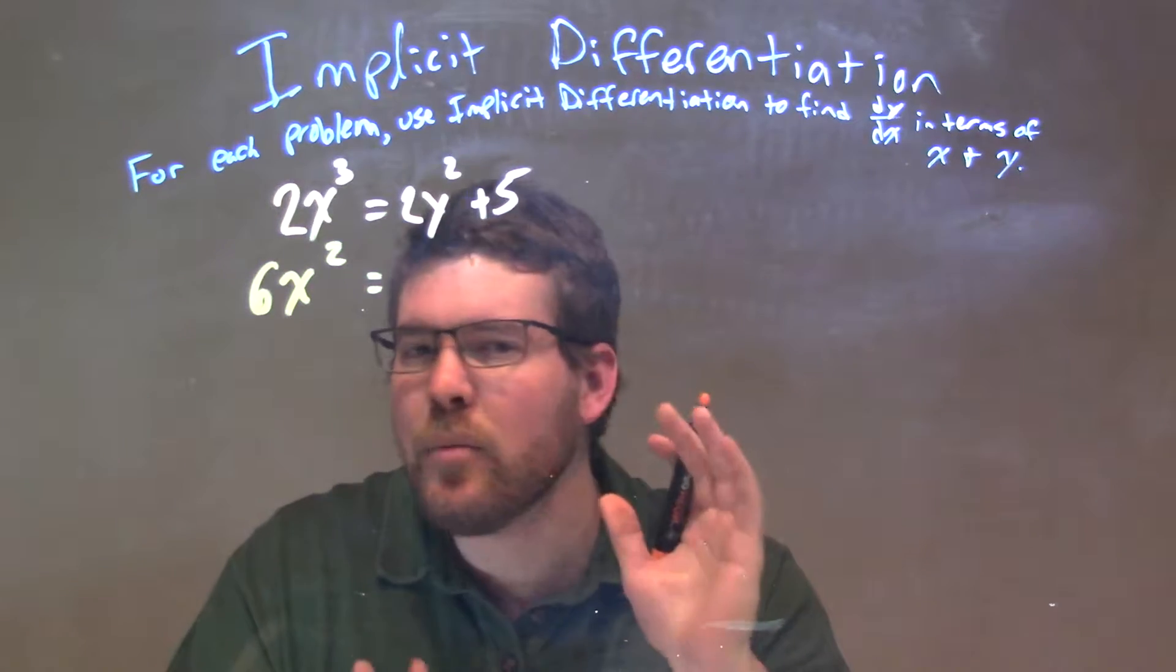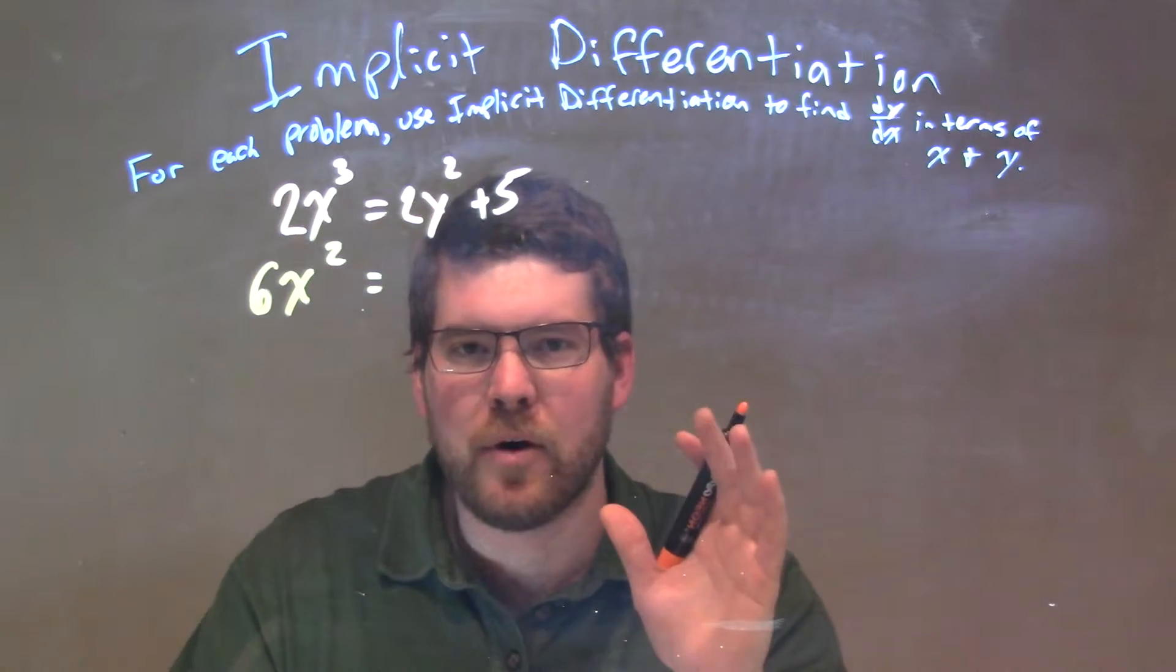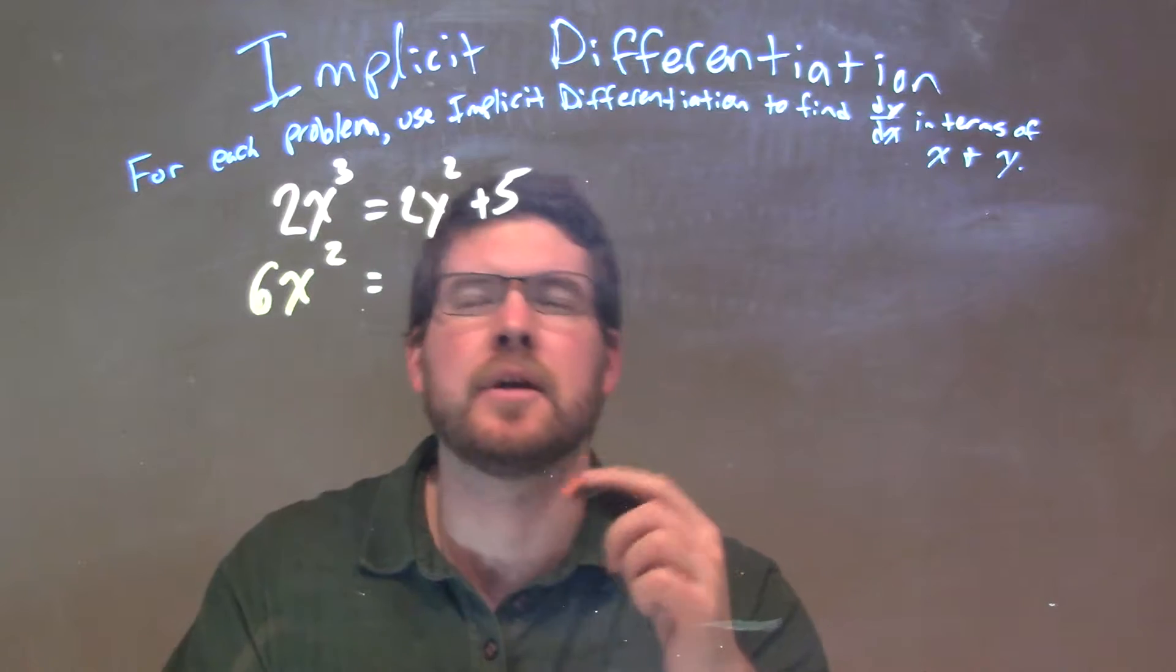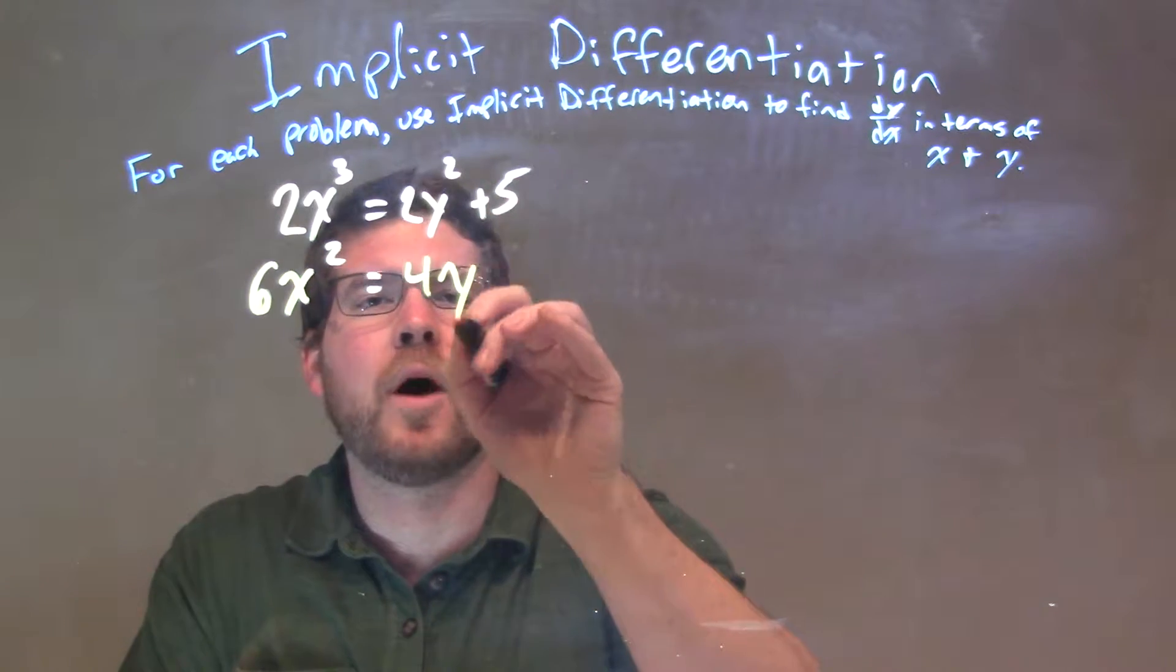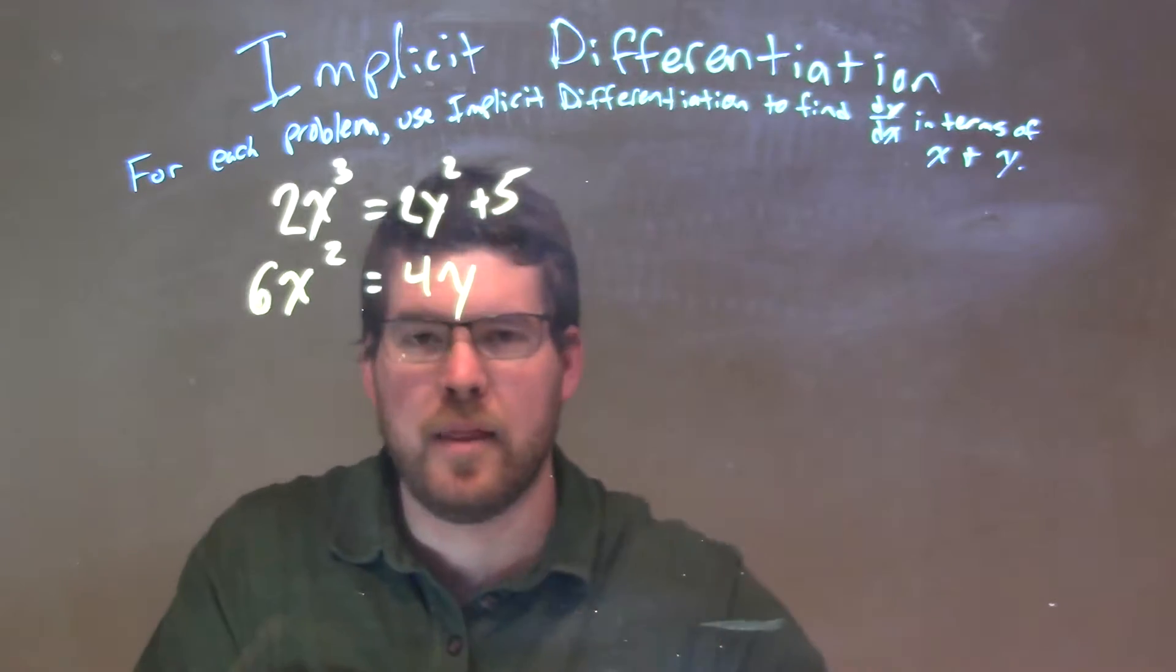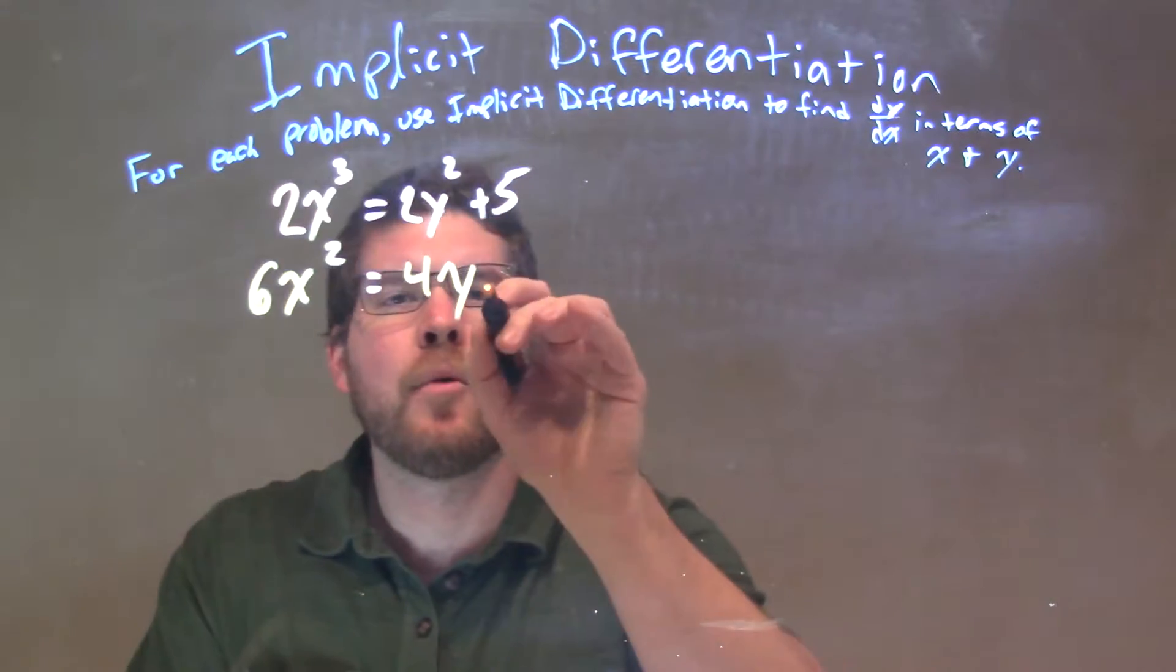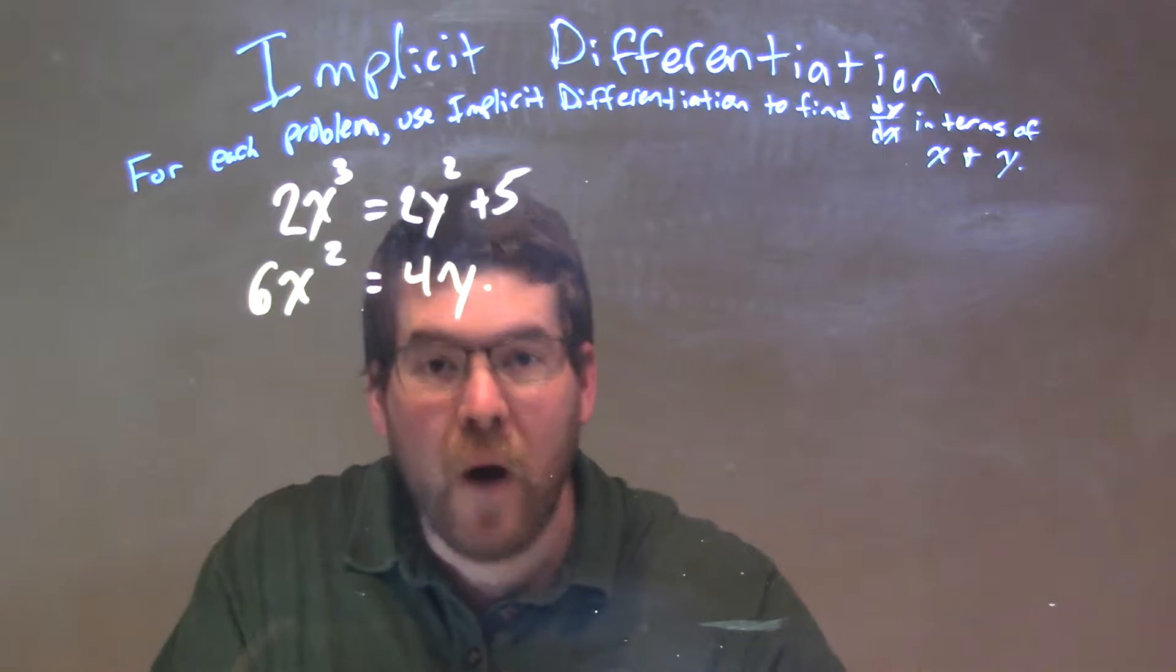But on the right-hand side, I'm going to do the same thing with y for the beginning part, but think about a chain rule here. 2 times 2, power goes down—2 times 2 is 4, and y² becomes y to the first power. But now we want to multiply by the derivative of the inside part, that y.